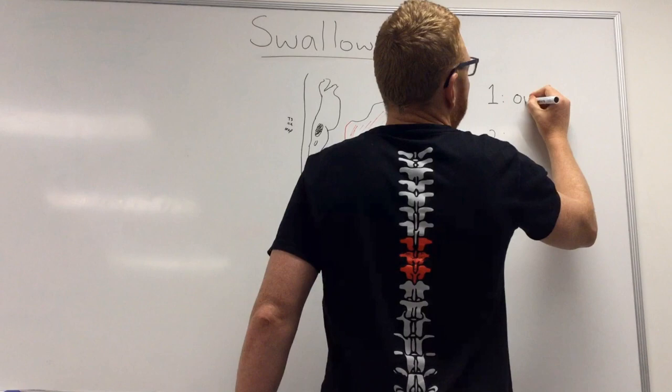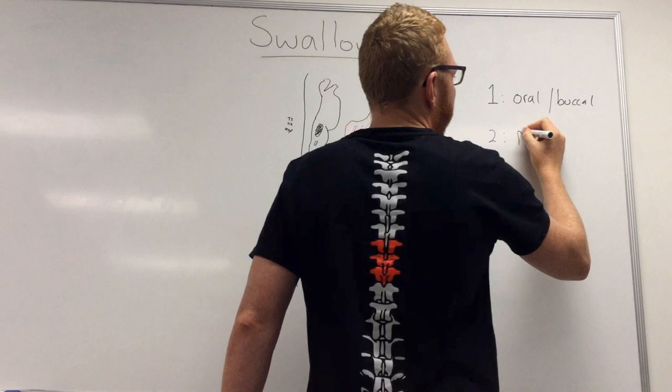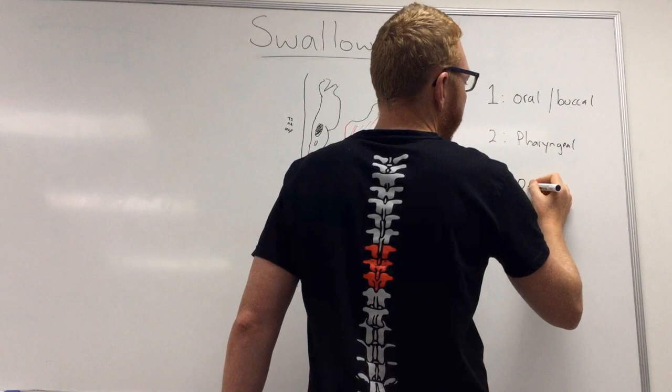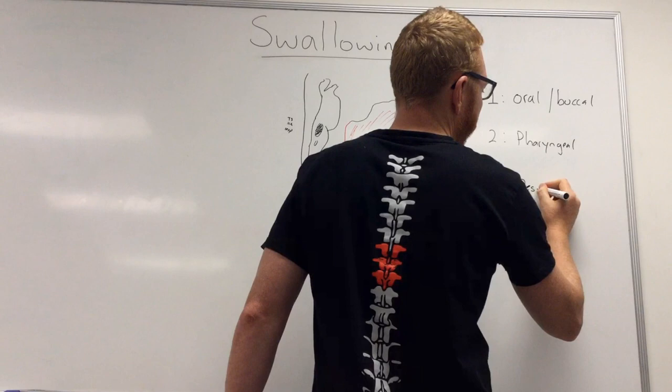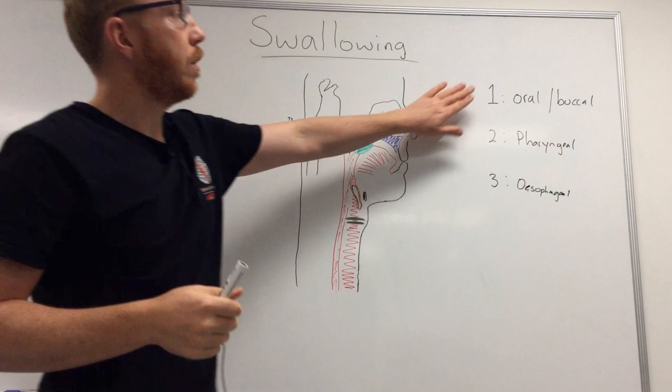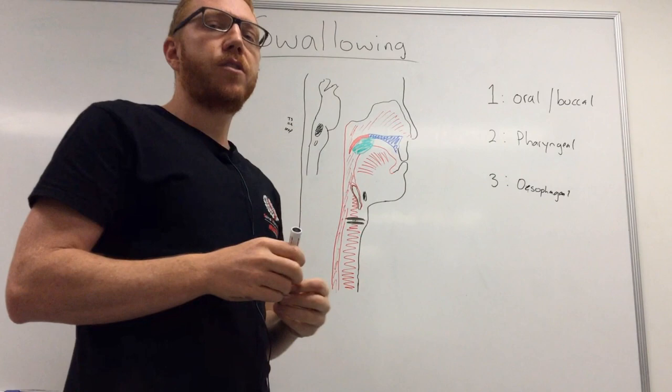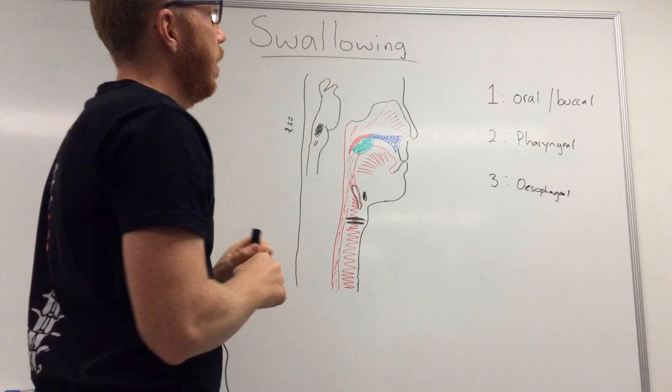The first phase is the oral or buccal phase. The second is the pharyngeal, and lastly we have the esophageal. The first phase is completely voluntary — under our own control — and the latter two are essentially autonomic or involuntary.